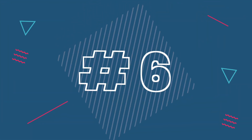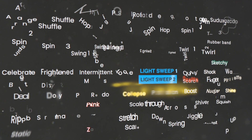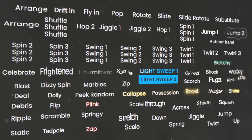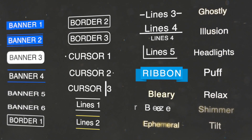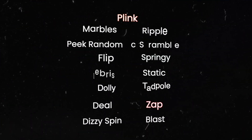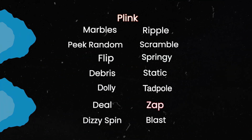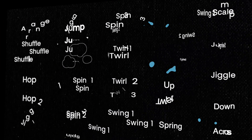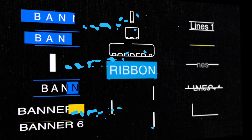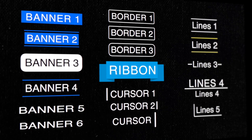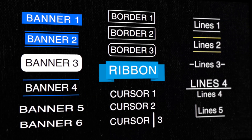Reason number 6: Title Pop comes with over 100 animated text presets in 8 different styles. There's energetic text presets, bouncy text animations, revealing presets, and so much more.